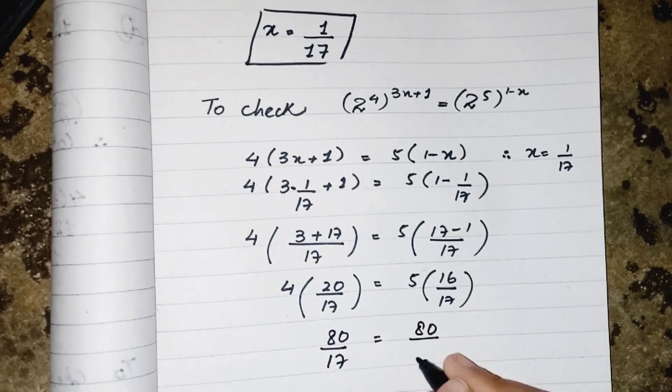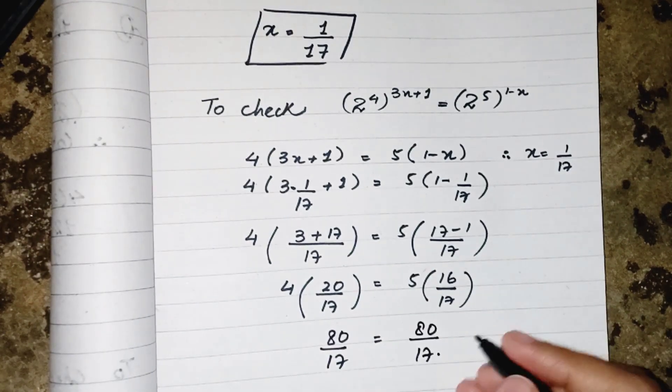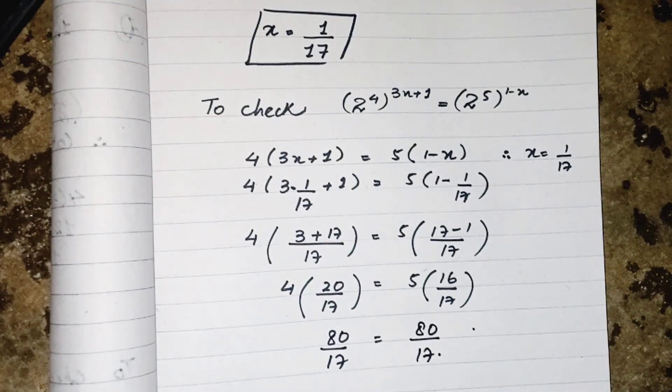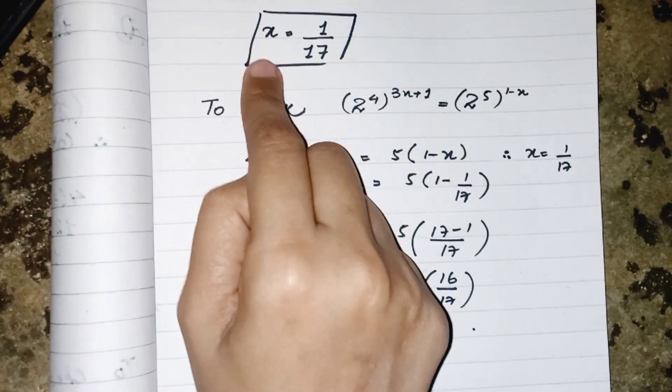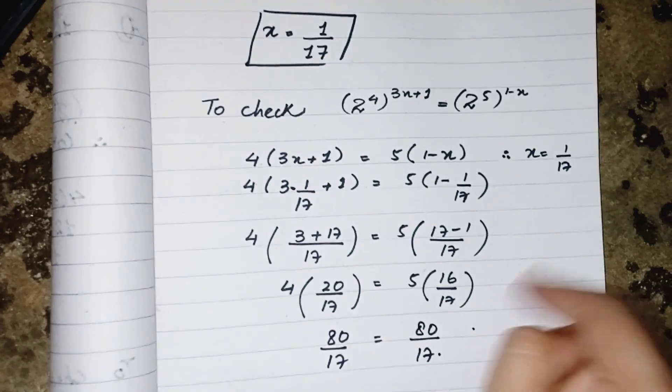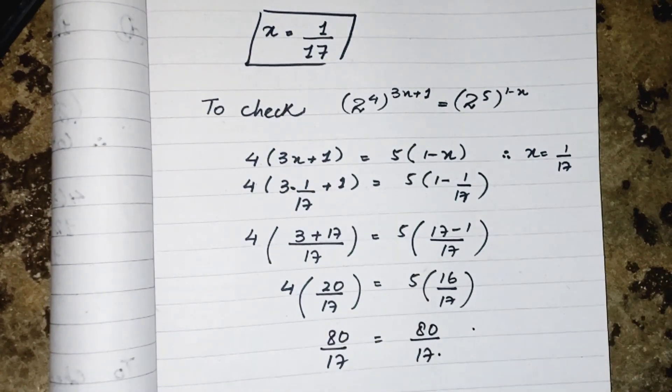Which means the value of x which we find, 1 upon 17, is correct because it's verified the answer. Hope you like the video, please subscribe and share with your friends. Take care, bye bye.